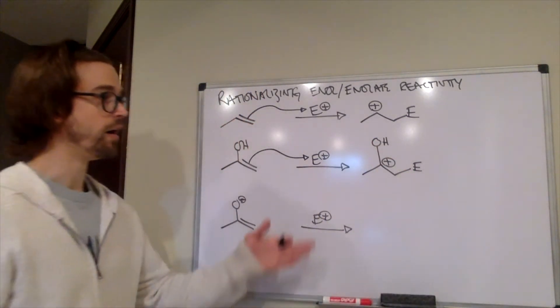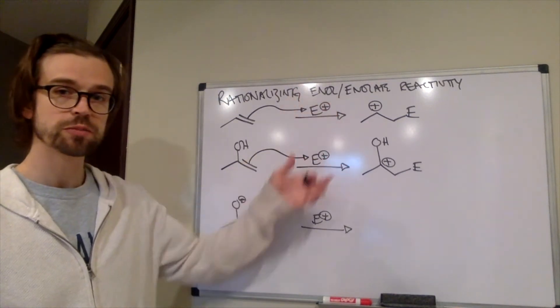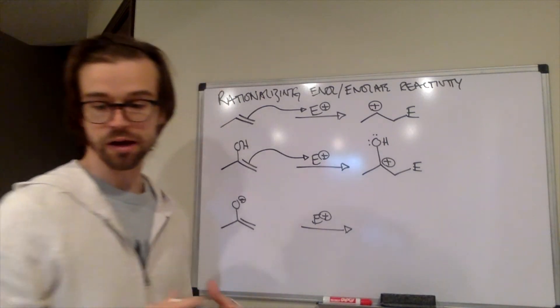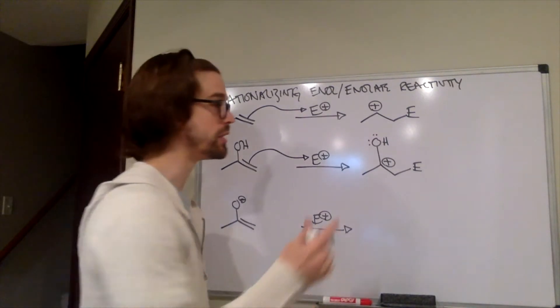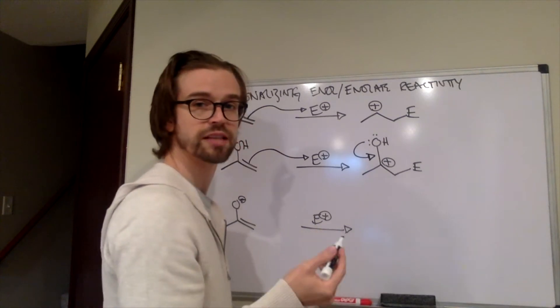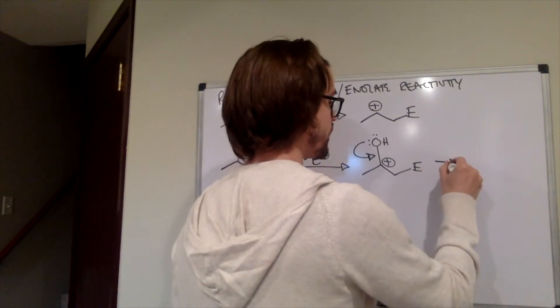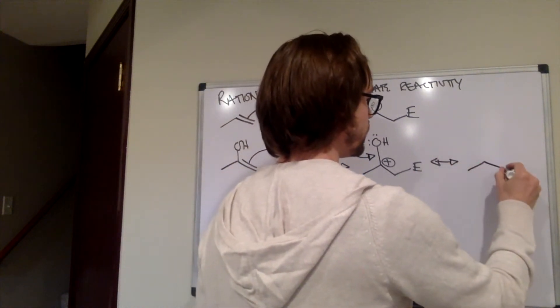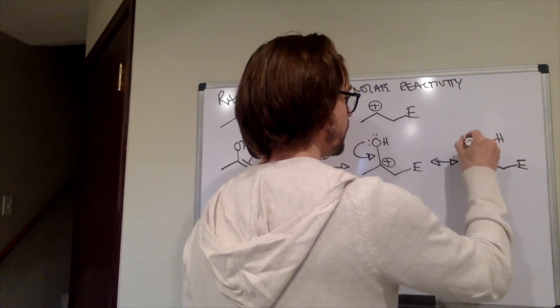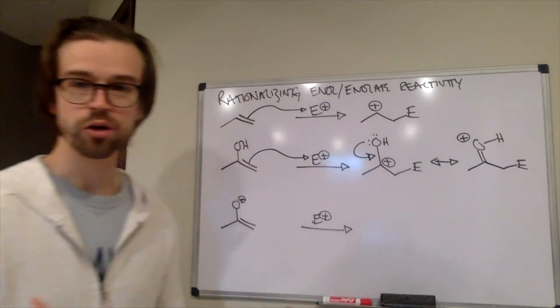And which is more stable at this point? Well, that positive charge is on that secondary position, but it's just there by itself. There's no delocalization. An enol is going to be even a more stable intermediate because of the delocalization, because of that resonance, which is again showing that conjugation.